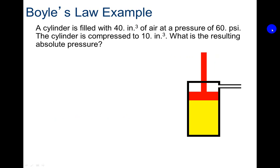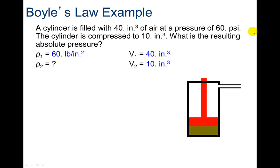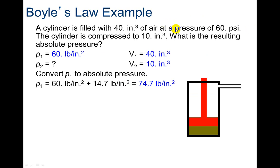So here's an example. A cylinder is filled with 40 inches cubed, that's a volume because it's inches cubed, of air at a pressure of 60 psi. PSI, I know that's a unit for pressure. The cylinder is compressed to 10 inches cubed, my units are matching, that's great. What is the resulting absolute pressure? So we look at the fact that this is in PSI, so my answer is going to be in PSI. Here's my knowns. I've got to convert first that 60 pounds per inch squared. I need to convert it into absolute pressure because it does ask for the resulting absolute pressure. If it told me this was absolute pressure and it wanted it in absolute pressure, I wouldn't have to go through this step first. But notice that I've got two different types of pressure and I have absolute pressure, so that's why I've got to do that. Convert p1 to absolute pressure: 60 lb/in² plus 14.7 lb/in² equals 74.7 lb/in².